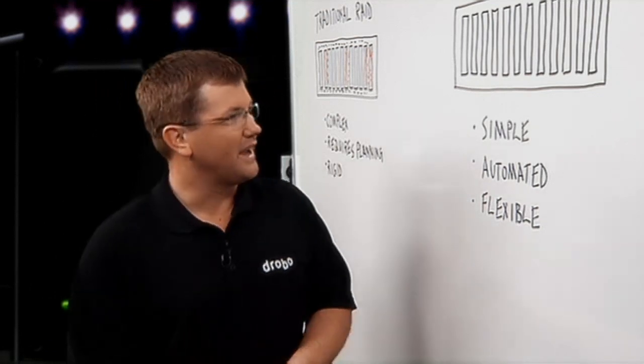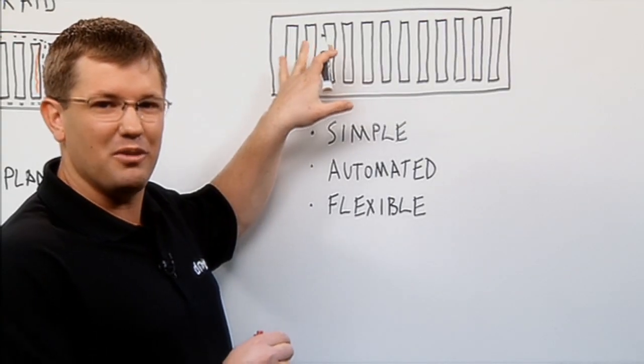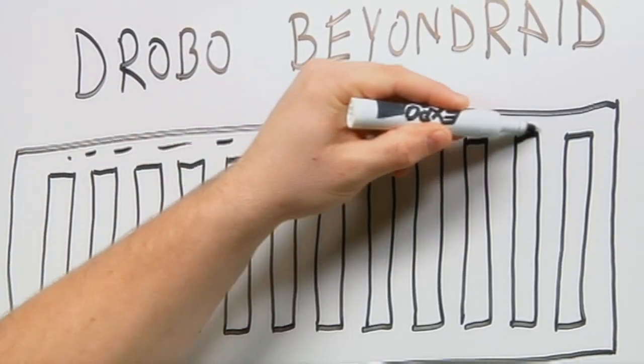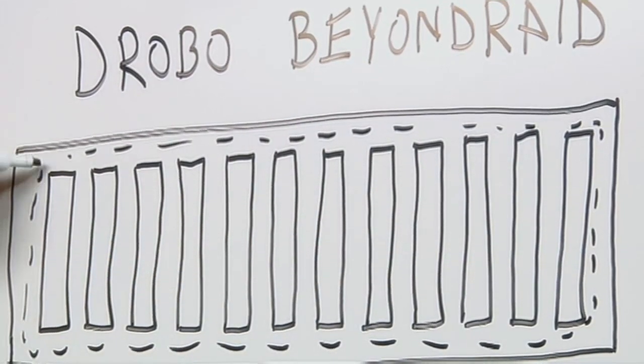With Drobo Beyond Raid, it's very simple. You insert the drives into the Drobo, and then the Drobo takes care of the rest. A Drobo is a single pool of storage, so you don't have to know anything about raid groups or grouping of drives.